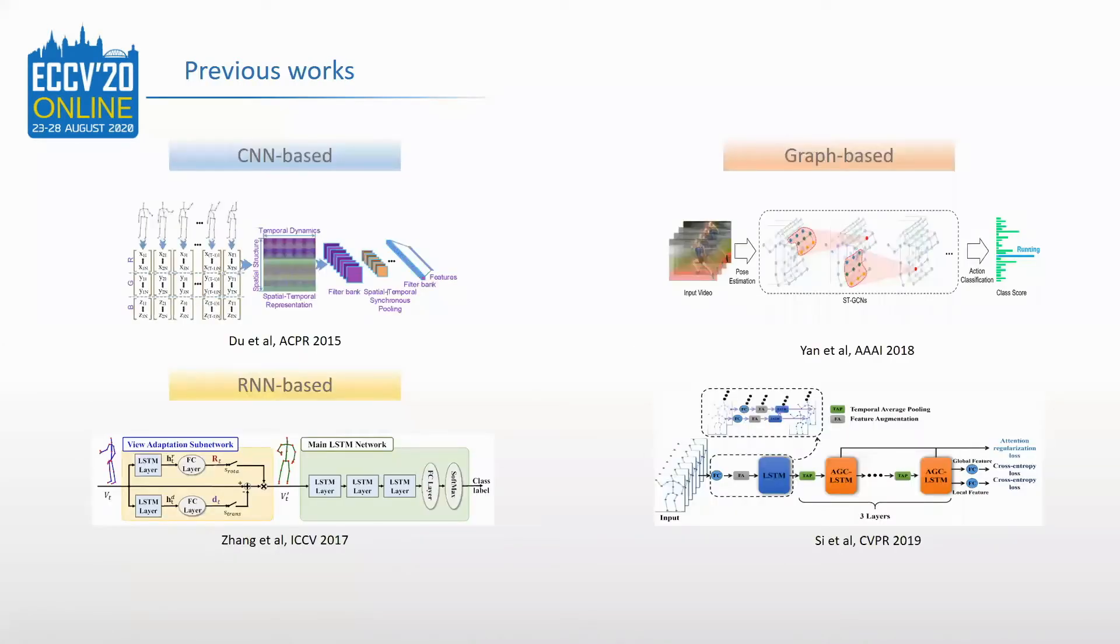Human action recognition based on skeleton data has received a lot of attention. Due to its effective representation of human motion, recent works mainly learn human action features with deep learning networks.